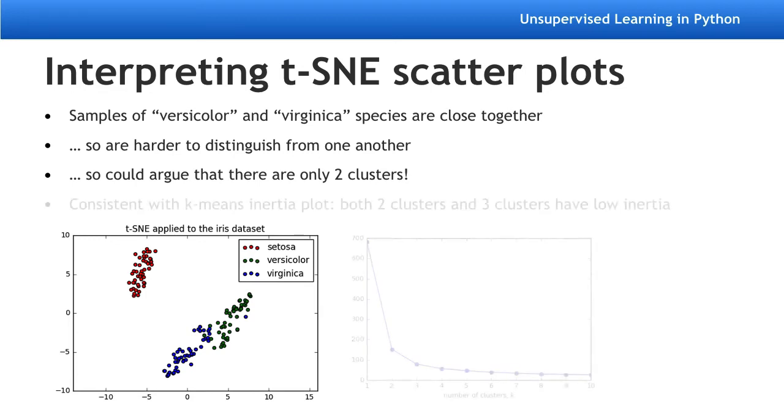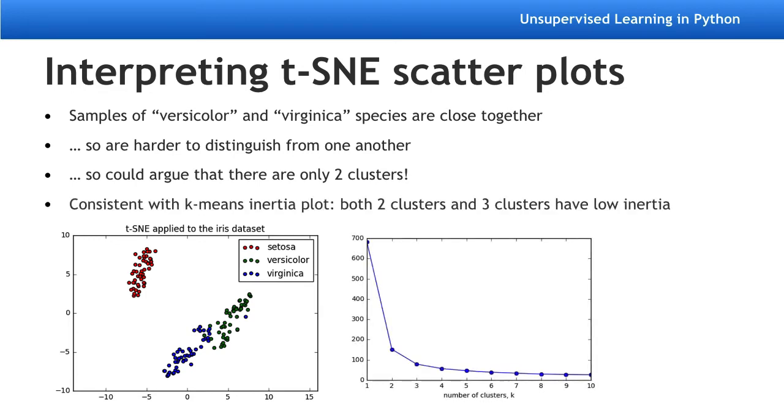This is compatible with our previous examples using k-means, where we saw that a clustering with two clusters also had a relatively low inertia, meaning tight clusters.